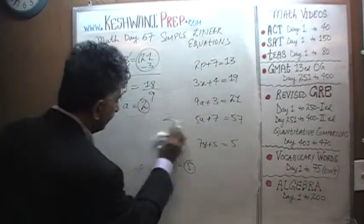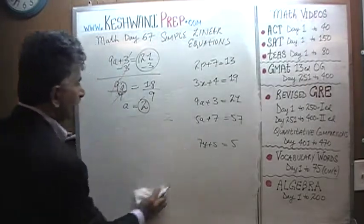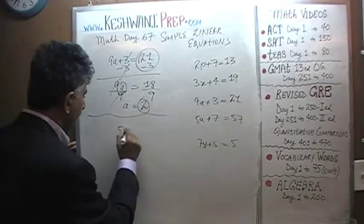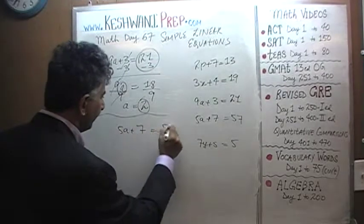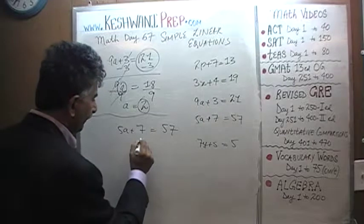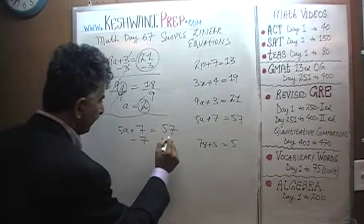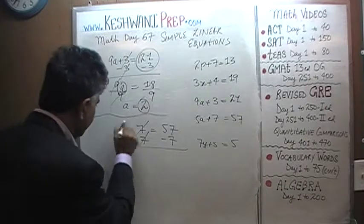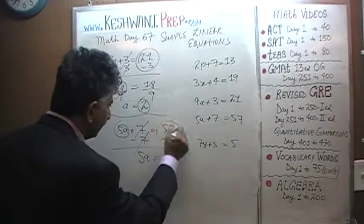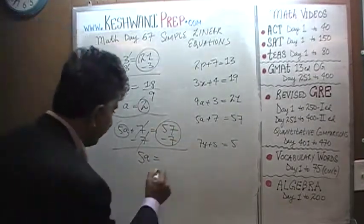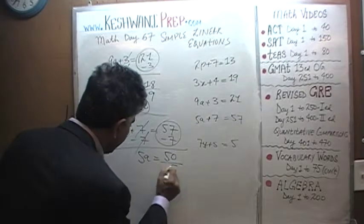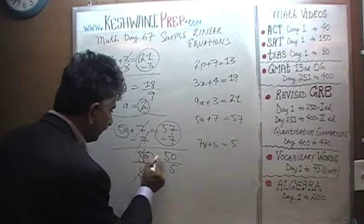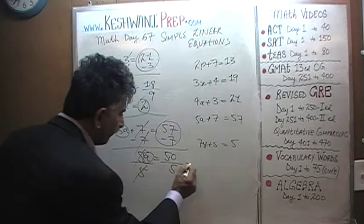Let's keep on going. Number 4: 5a plus 7 equals 57. Subtract 7 from both sides — 7 is going to get knocked out. 5a comes down. 5a equals 57 minus 7, which is going to be 50. Divide both sides by 5 — that's going to knock out that 5 — and a is going to be 50 over 5, which is 10.